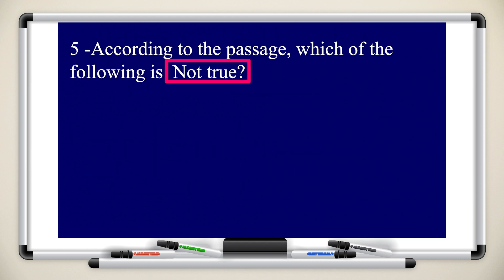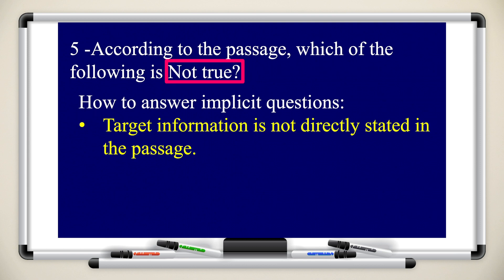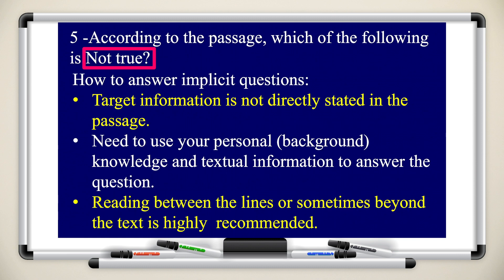Question five: according to the passage, which of these is not true? How do we answer implicit questions? The target information is not directly stated in the passage. Sometimes you need to use your personal background knowledge and the text information to answer this question. Read between the lines, meaning understand the passage.